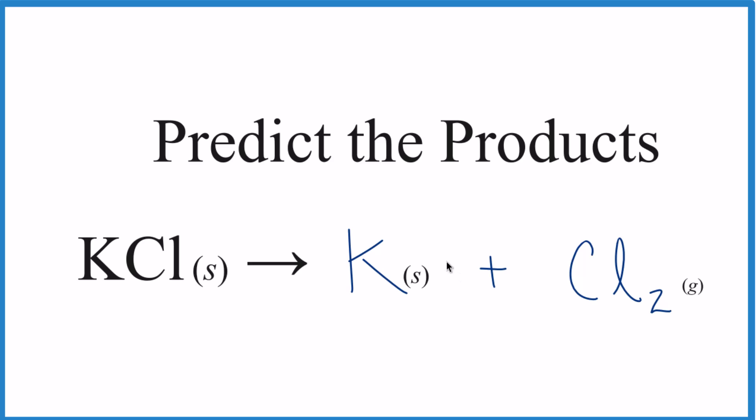This equation isn't balanced. We could balance it. We have two chlorines here and just one here. Let's put a two. It balances the chlorines. Two times one is two. We have two. Two potassiums. Put a two here. Now it's a balanced equation.